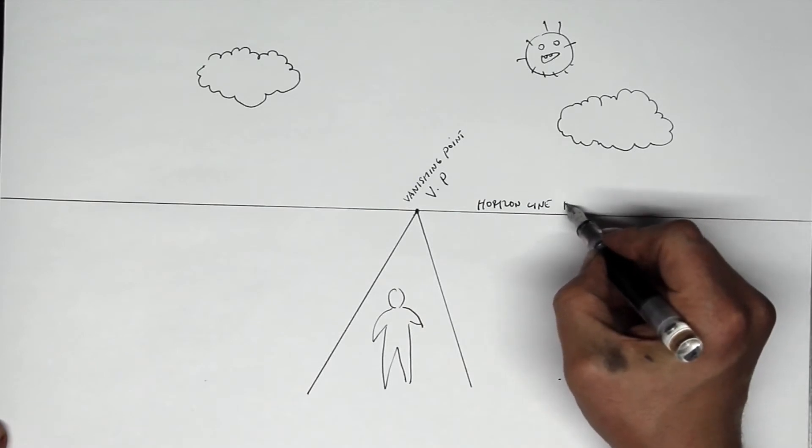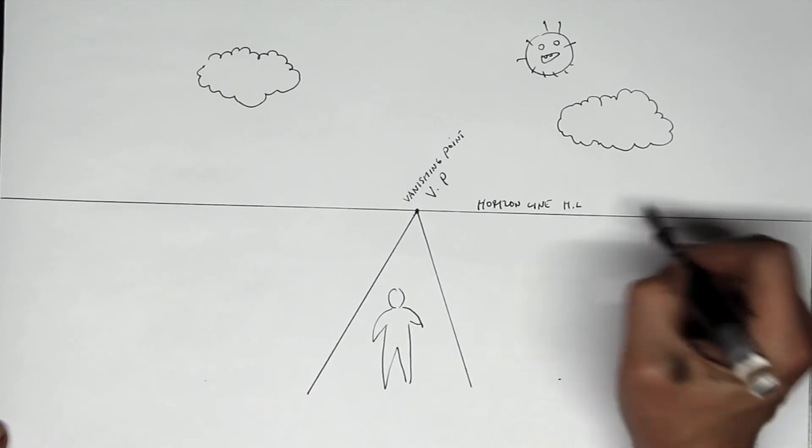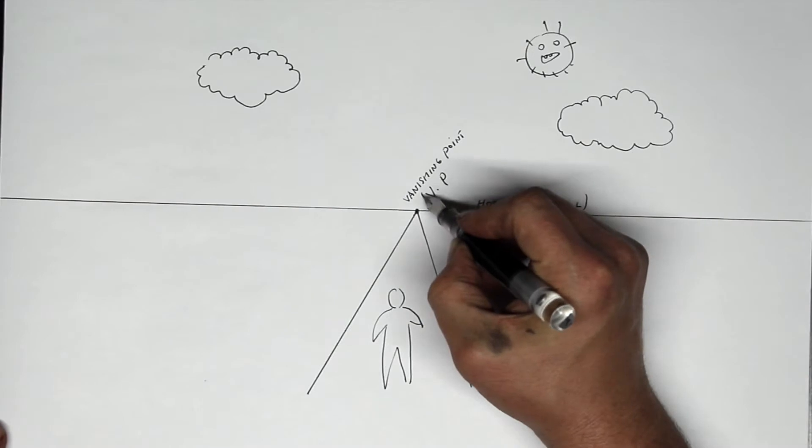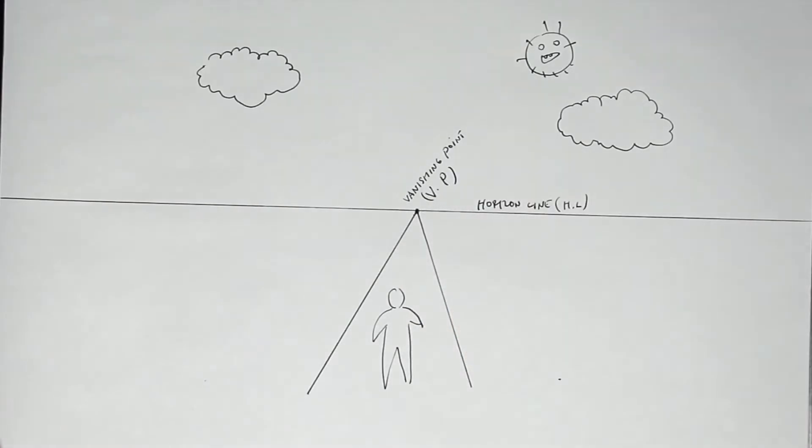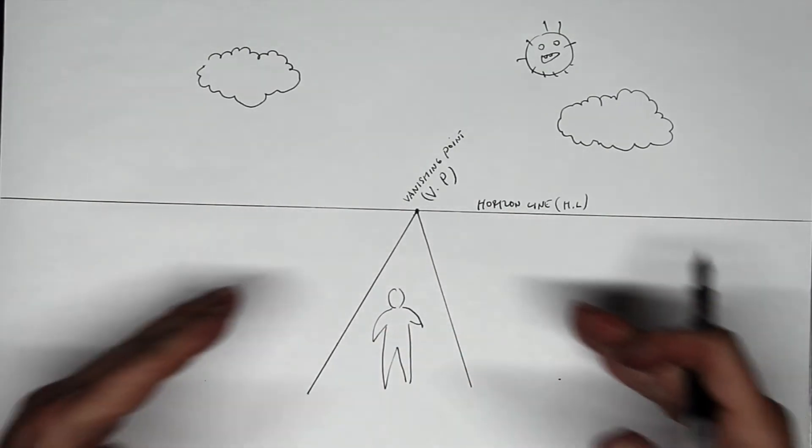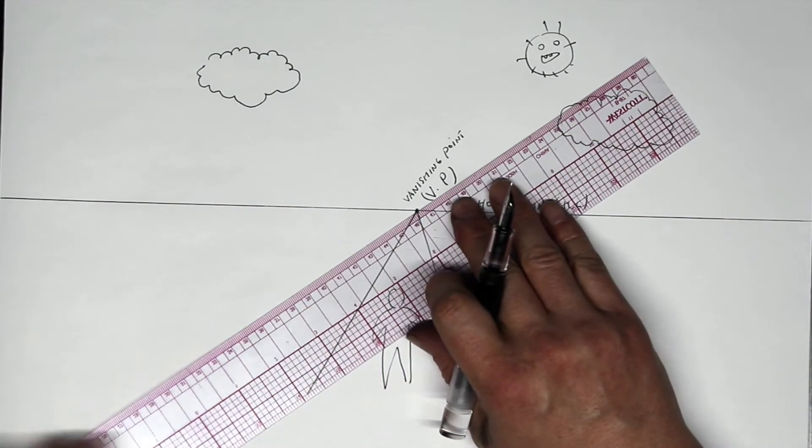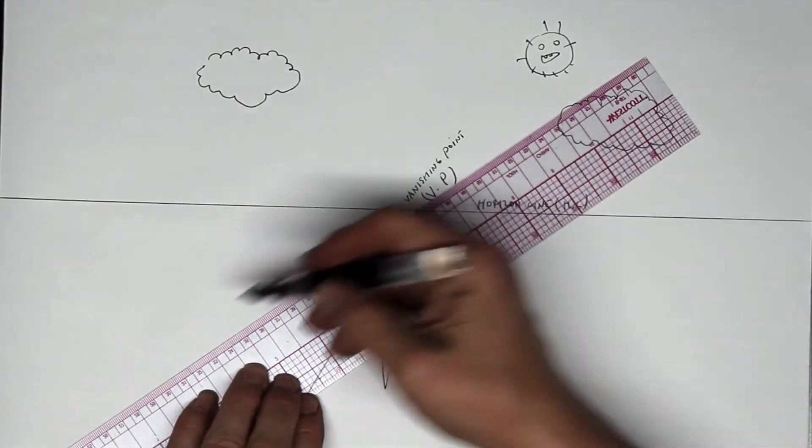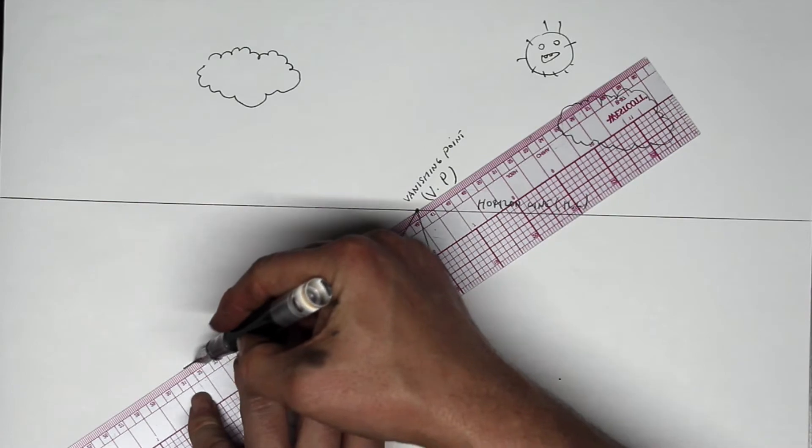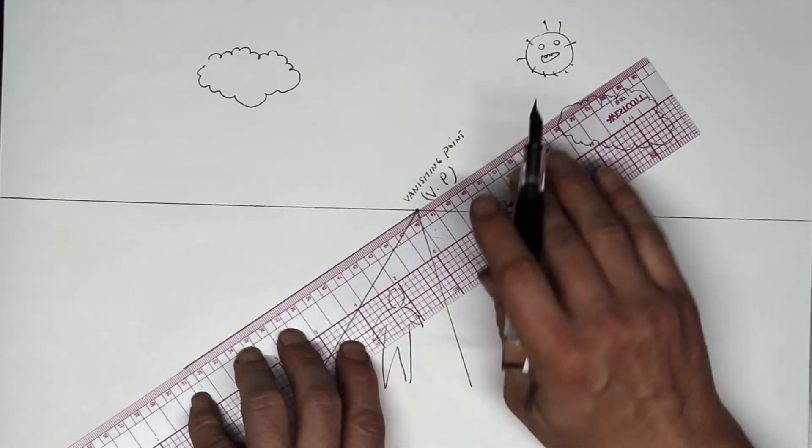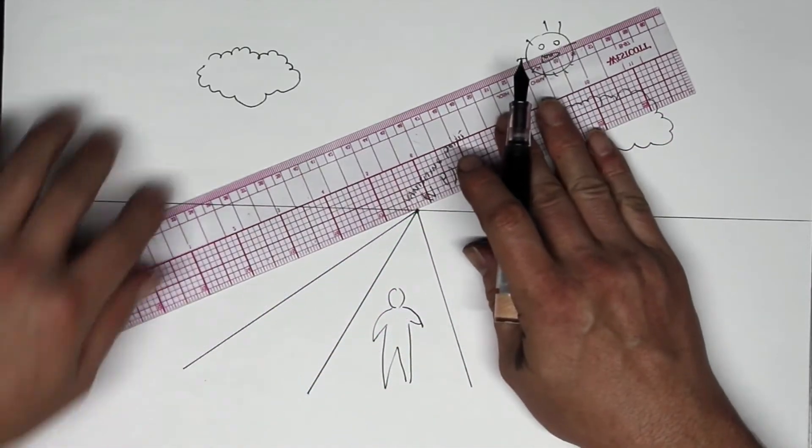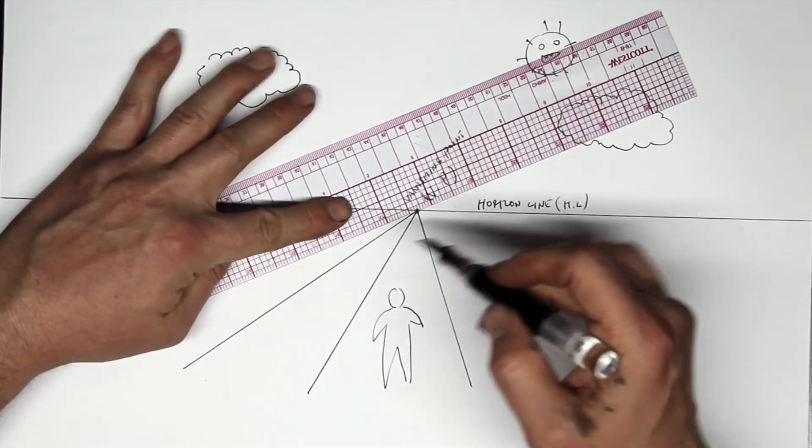This is called one point perspective. We have a single spot into which all depth recedes. So if I have another road over here, some kind of road that runs parallel to this one, a bike path let's say, the sides of the road are going to recede towards the same vanishing point. In one point perspective, all things recede to a single point.